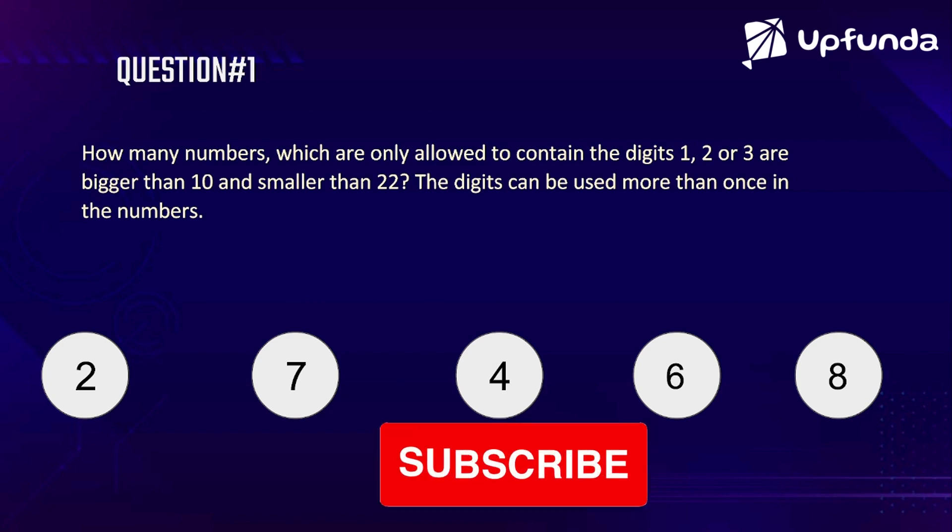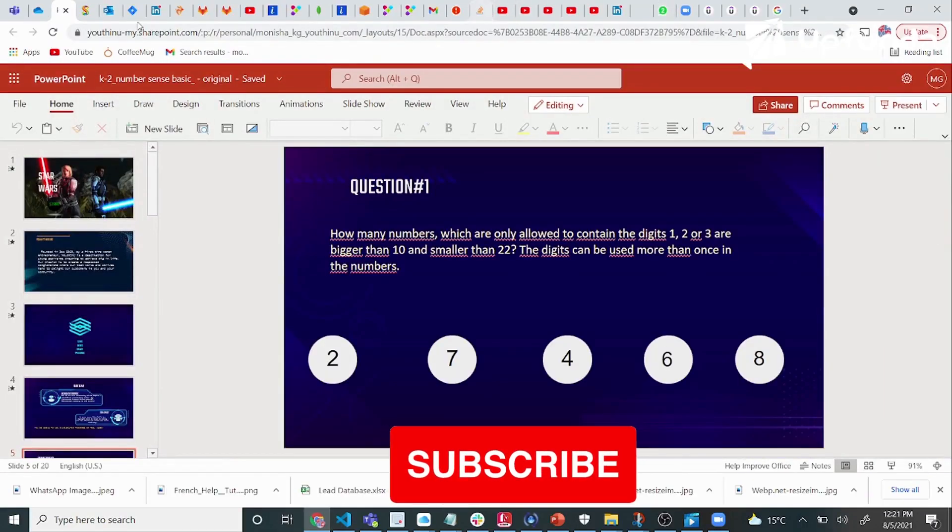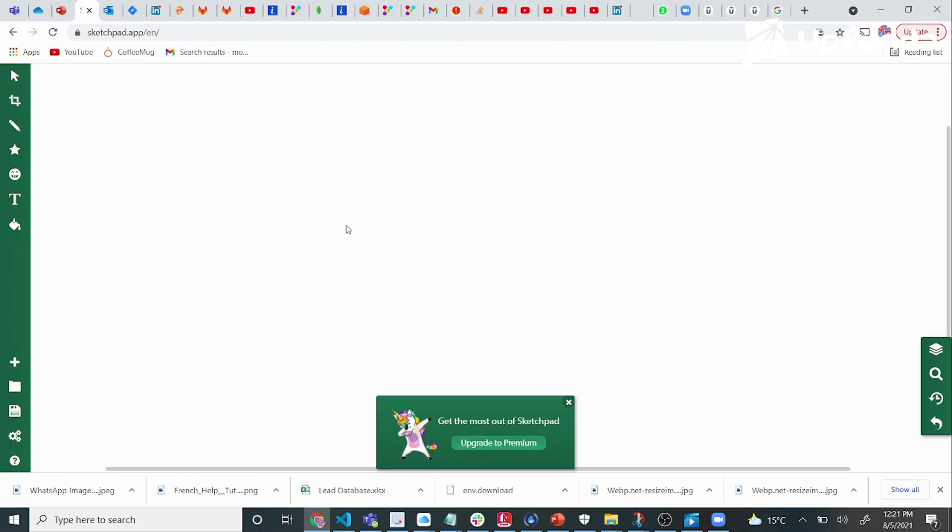First thing we should know is what is a digit and what is a number. When I say number 12, this is a number. The digits in this number are 1 and 2.